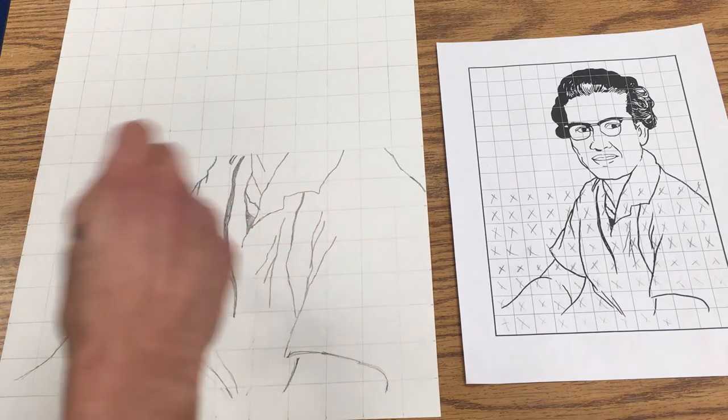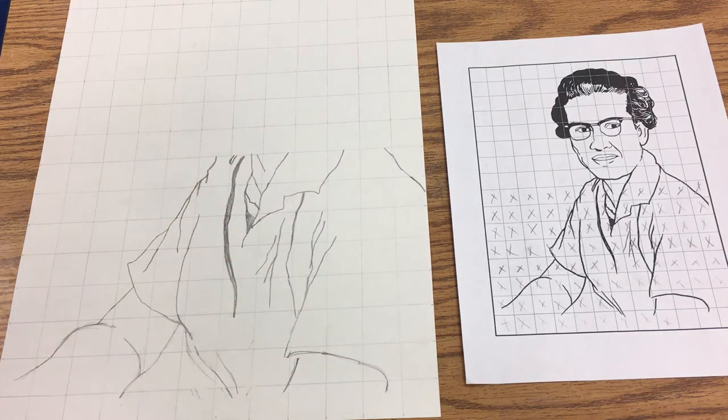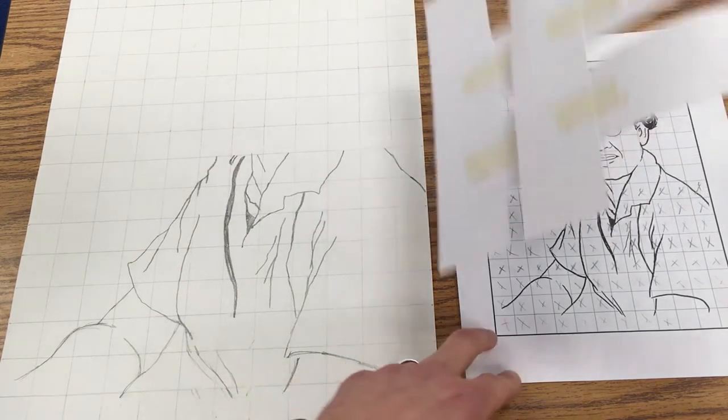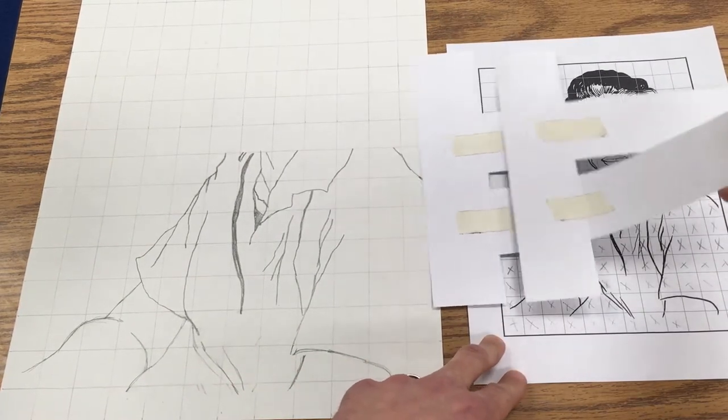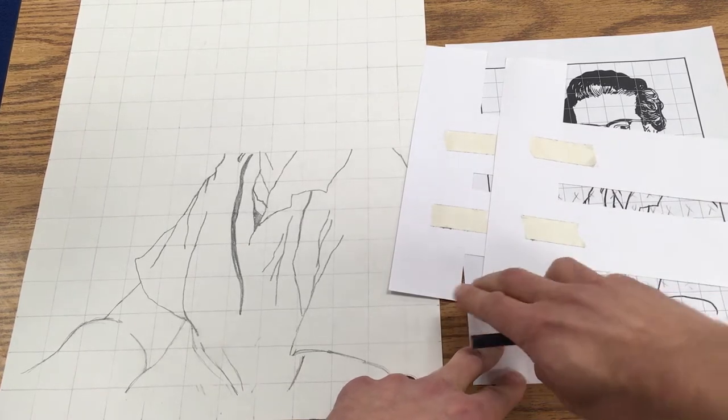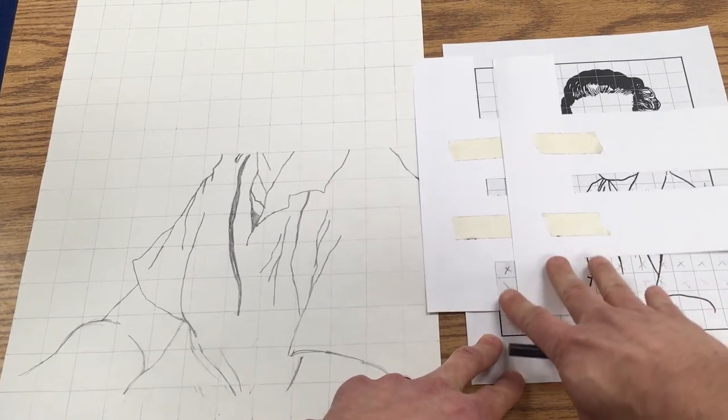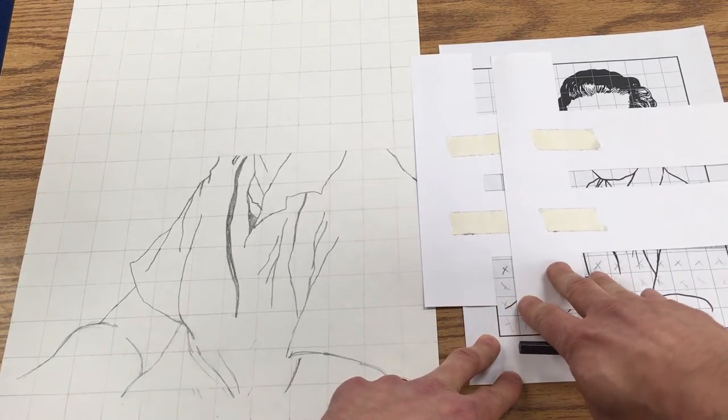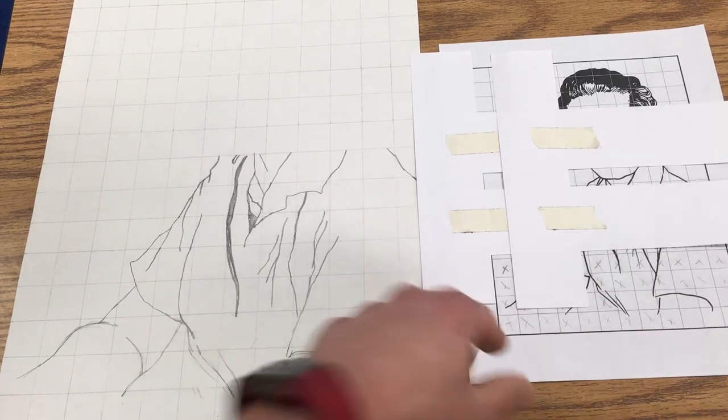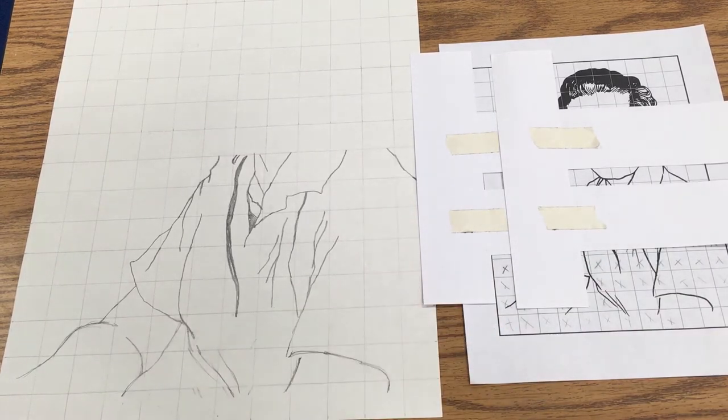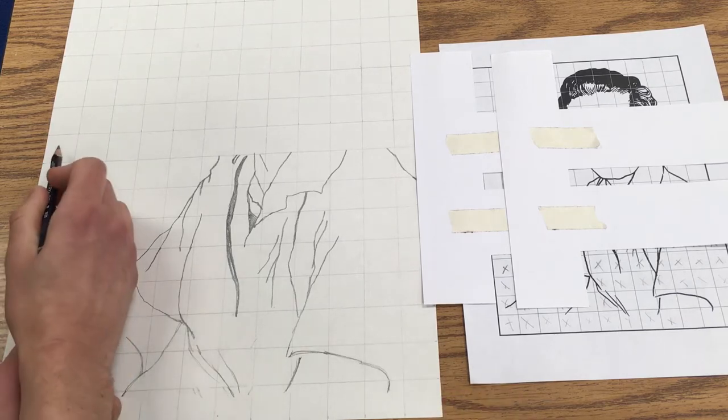I've already done about half of this portrait here, and I've got these papers that I've put on here so that I can see just one square at a time. As I finish each piece, I just make an X.